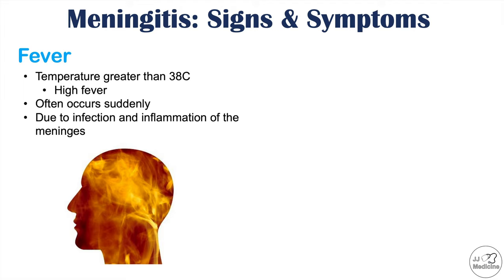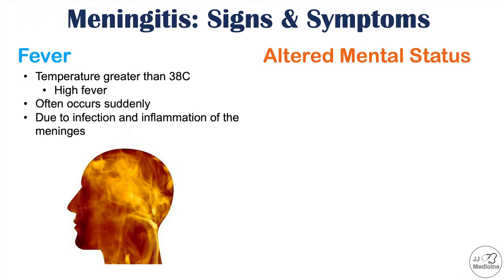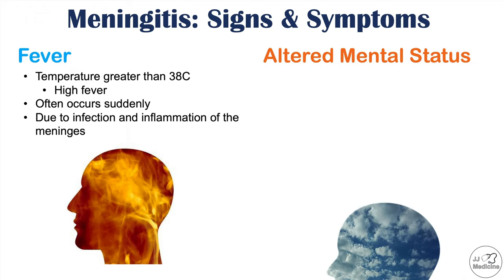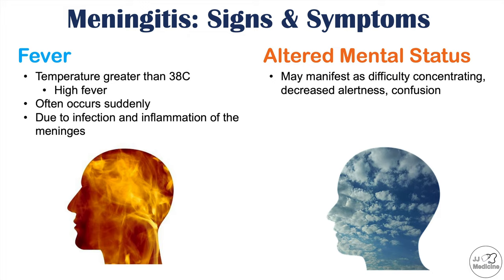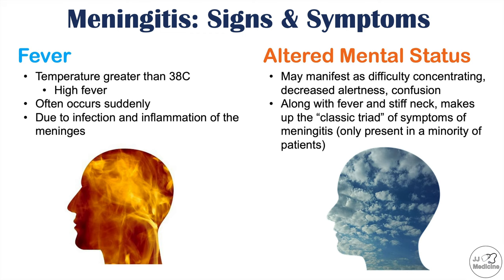This is due to infection and inflammation of the meninges — if the layers covering the brain are inflamed, there will be a very high fever. Patients can also experience altered mental status, which can manifest as difficulty concentrating, decreased alertness, or confusion.